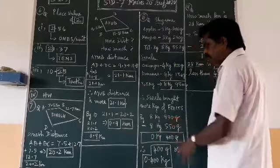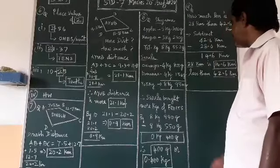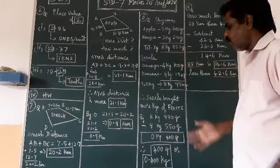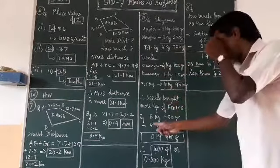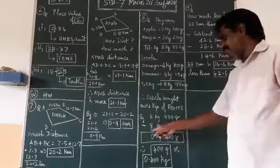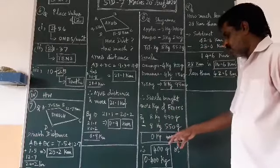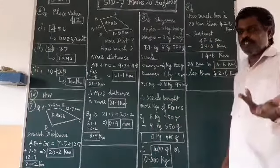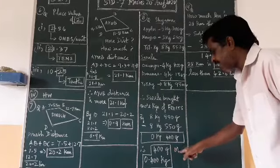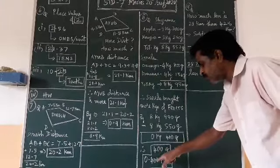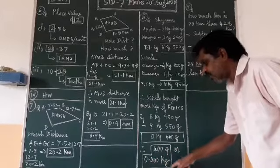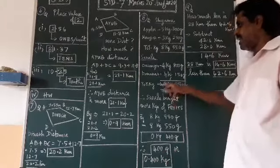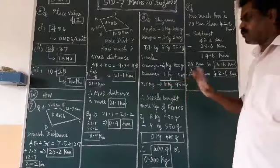How much more? 8 kg 950. Immediately what you have to do? 8 kg 950 subtract 8 kg 550. You will get how much kilogram more Sarala has bought. So 8 kg 950 minus 8 kg 550. 950 minus 550, you will get 400 grams. 8 minus 8 is 0 kg. 0 kg has no value, so 400 grams. Or in kg, 400 divided by 1000 gives you 0.400 kilograms. Either way you can write the answer. So she has bought 0.4 kg more, and Sarala has bought more.